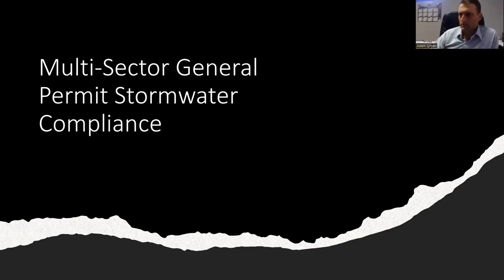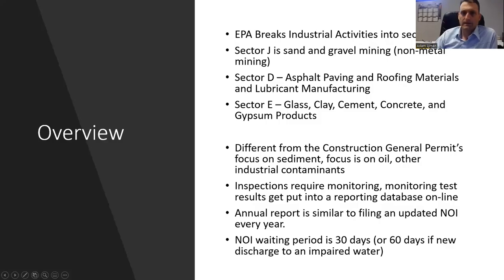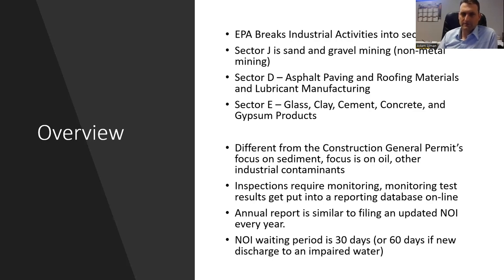I wrote this presentation a while back and cleaned it up, removing some material due to time constraints. We're going to talk about spill prevention in the construction general permit itself, some dewatering and what's allowed to discharge, and then the inspections and monitoring requirements. In the multi-sector general permit, I should mention I'm in Idaho — our DEQ took over primacy in July 2021 and adopted the federal permit. So in Idaho, we use the federal multi-sector general permit.